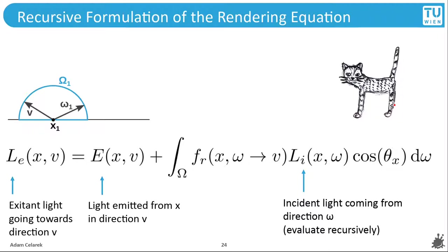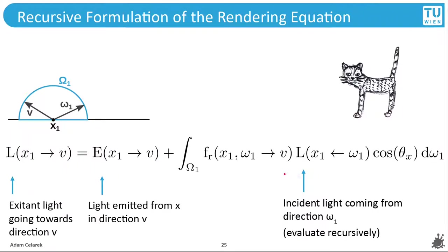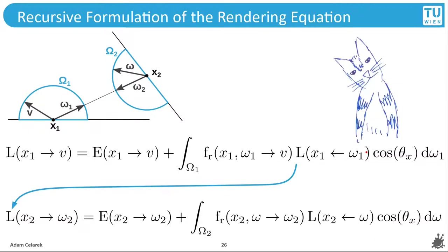We make a change in notation. We now use arrows to show the direction of photons for the exitant, emitted, and incident radiance. However, omega in the integral still points away from point x. We also change the name of the differential — we added a subscript 1 — but this is just a variable name, so we can do anything.